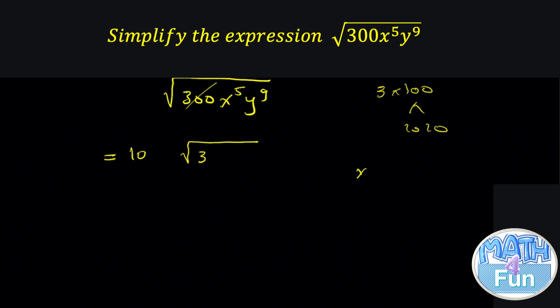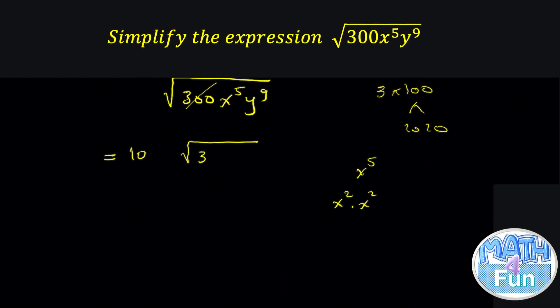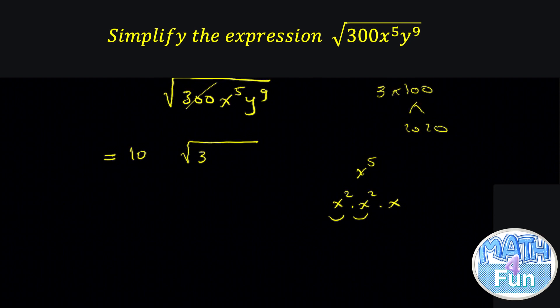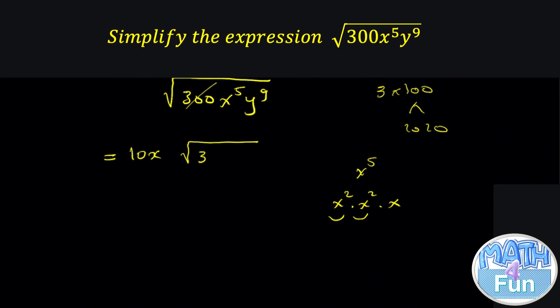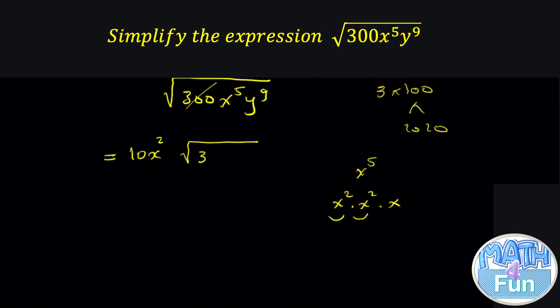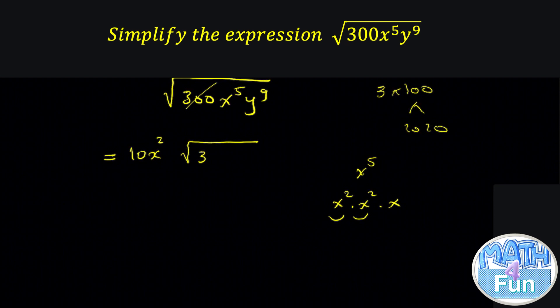Now x to the power 5, we can write it as x squared times x squared times x. So every x squared, we can take it one time outside. So x squared outside becomes x, but we have twice. We have 2 times x squared, so it becomes x squared outside. So x and x outside, multiply them together, you get x squared.